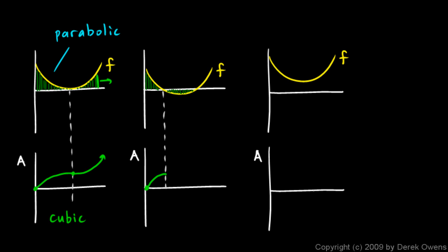As we accumulate negative area, my value for a goes back down. It's not going down very fast — it's going down fastest right at this x value where the graph is the most negative. And then it's not going down at all right there at that point, so this graph levels off again at that x value. Then as we continue to the right, we accumulate more area at an increasing rate again. And once again, this will be a cubic if this is a parabola.